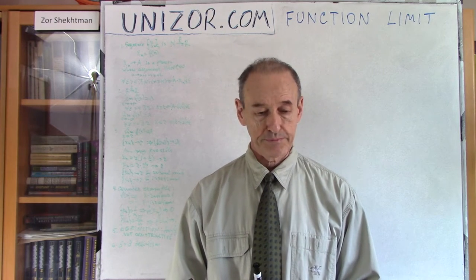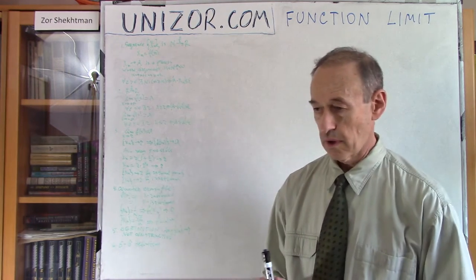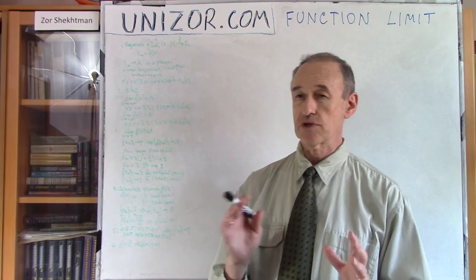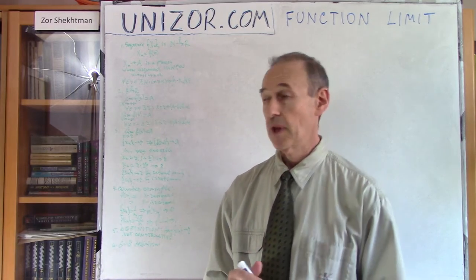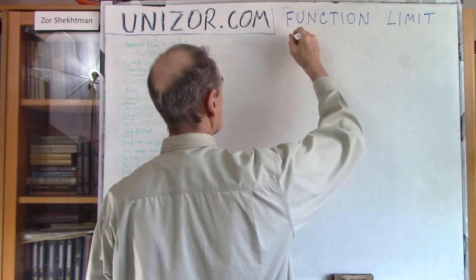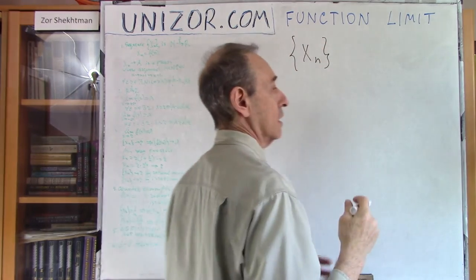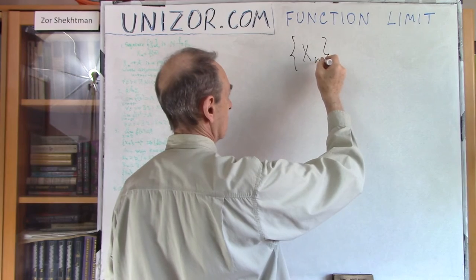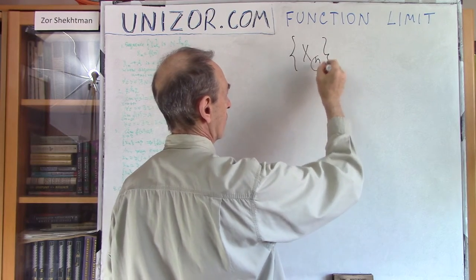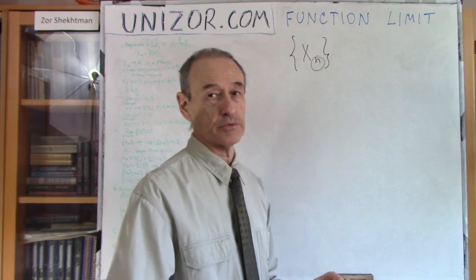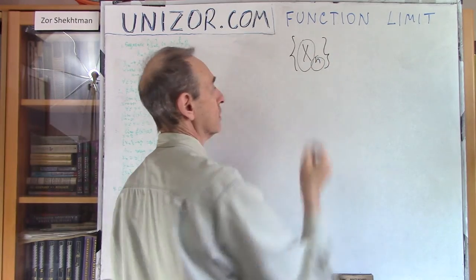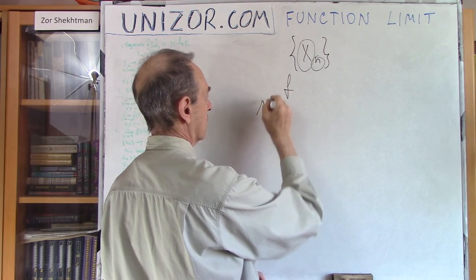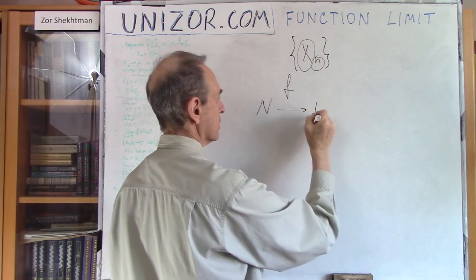Alright, back to limits. As I said before, we have already touched limits when we were considering the limits of sequences. Let's think about what a sequence is. Well, a sequence is a function — it's a function which has as its domain all the natural numbers 1, 2, 3, 4, 5, and the values are some real numbers. So we can say that this is a function from the set of all natural numbers to the set of all real numbers.